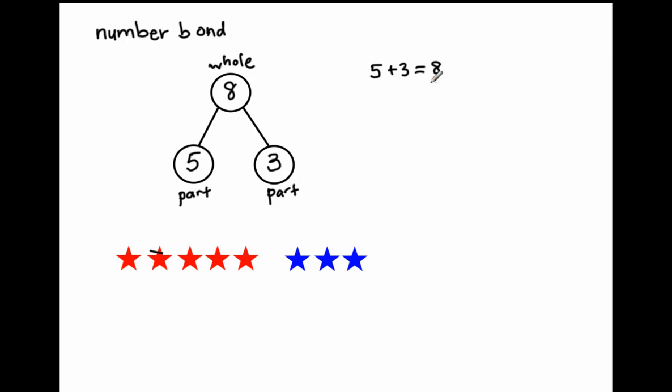And because of the any order property in math for addition, which states that I can add the numbers or the addends in any order that I'd like, I can also start with three and then count on five more. So three, four, five, six, seven, eight. And I'll still get eight.